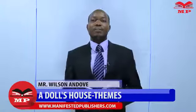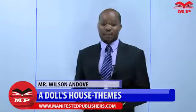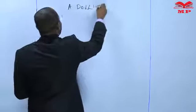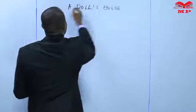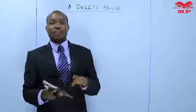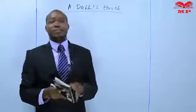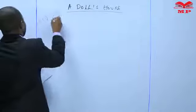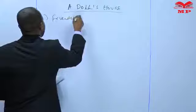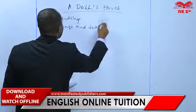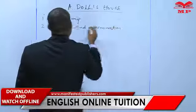Hello students, this is Manifested E-Learning Platform. My name is Wilson Andove, I'm your literature teacher. We are looking at the book 'A Doll's House.' Today we are going to discuss some other themes. In the previous lesson we discussed three themes; today we are going to discuss three other themes: the theme of friendship, the theme of change and determination, and the theme of betrayal.